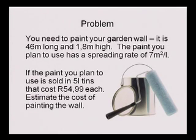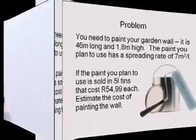The paint you plan to use has a spreading rate of 7 square meters per liter. If the paint you plan to use is sold in tins of 5 liters, and a tin costs 54 rand and 99 cents each, estimate the cost of painting the wall.